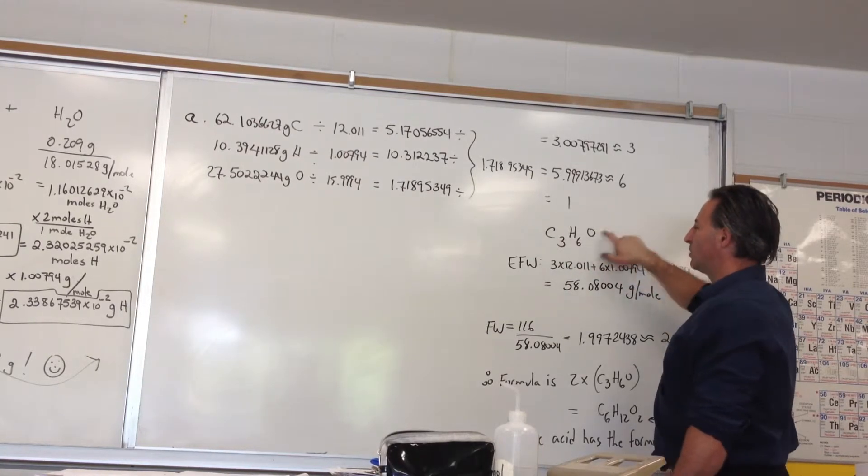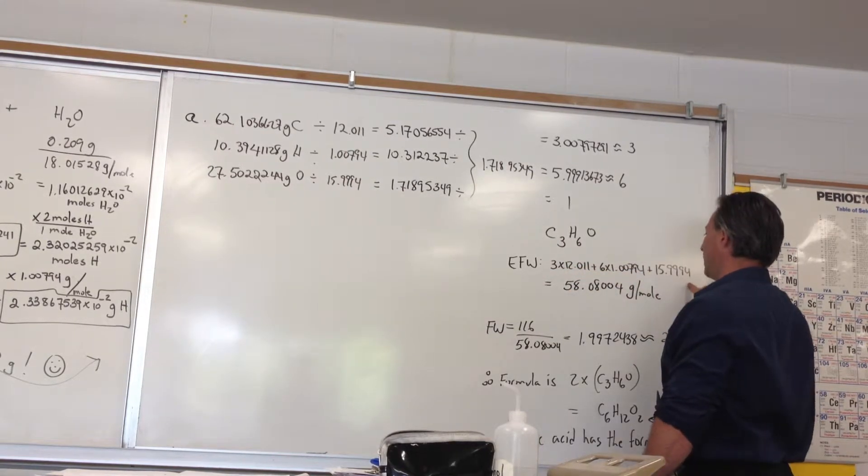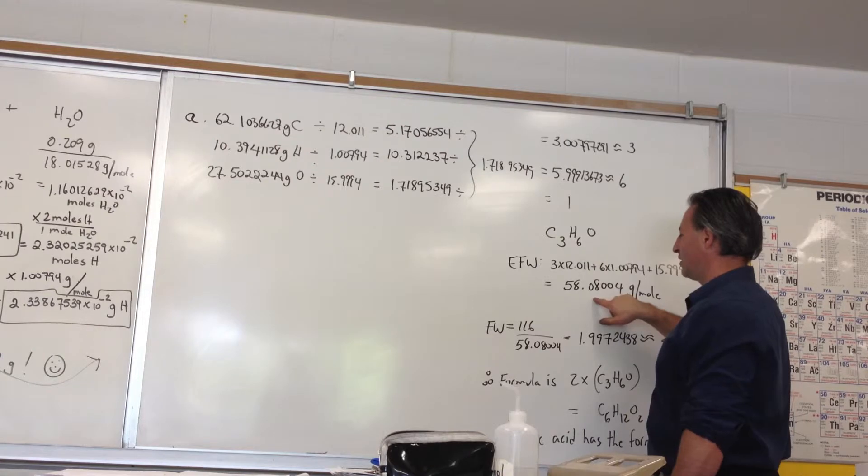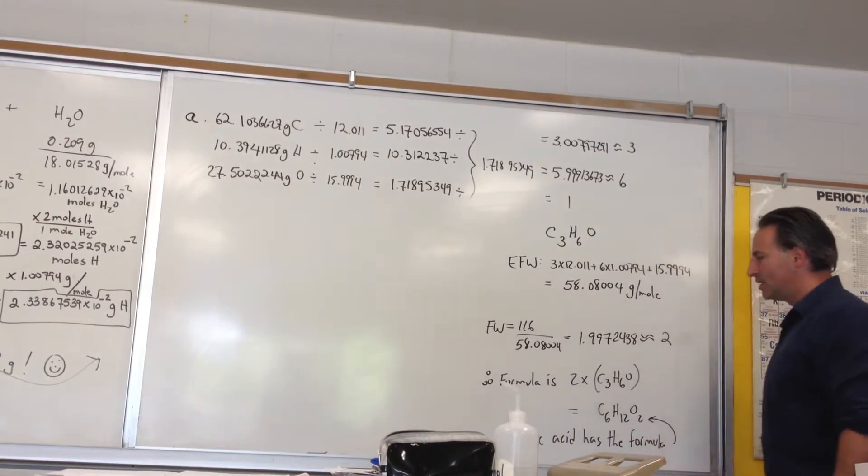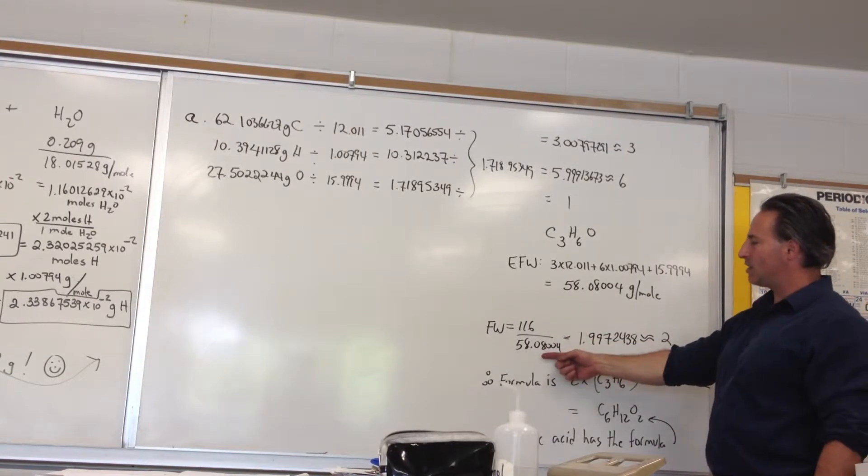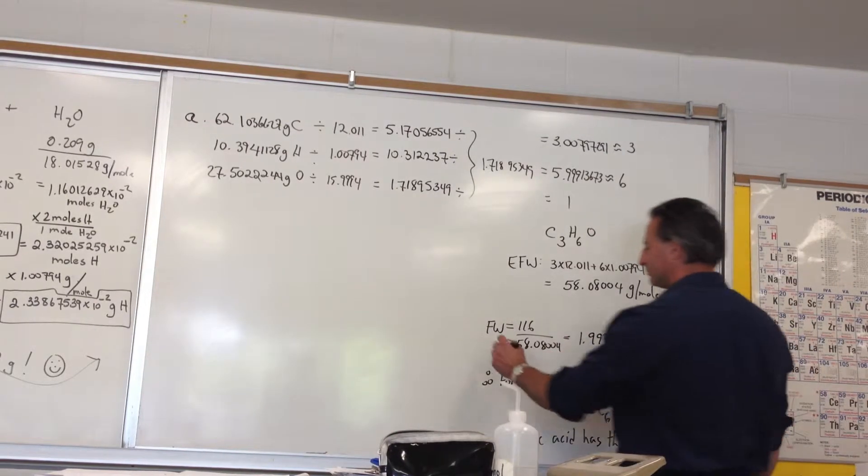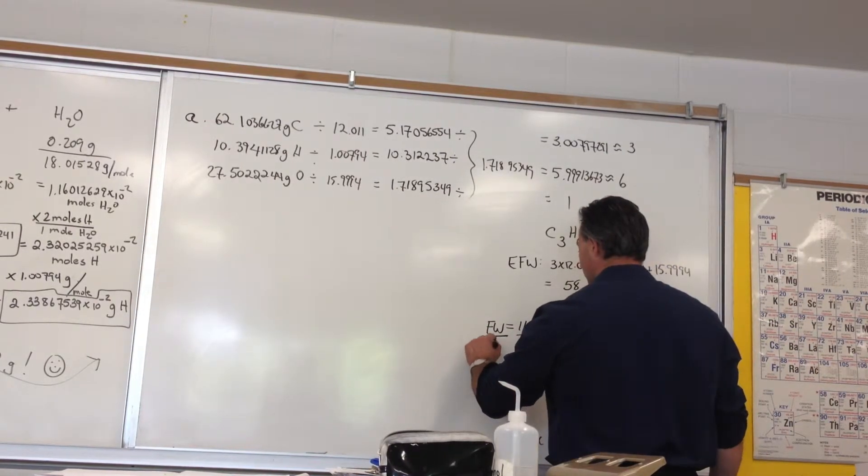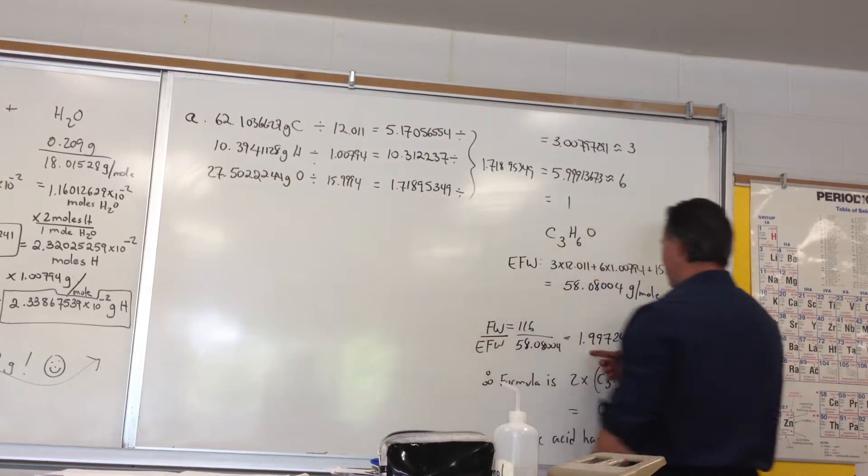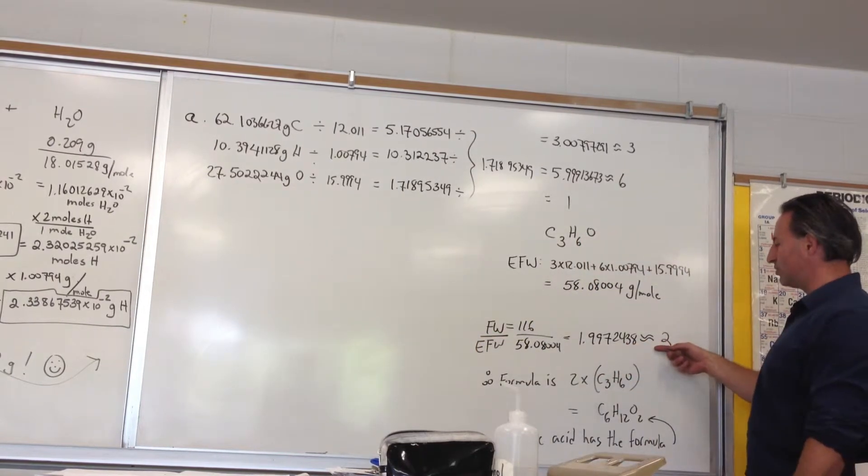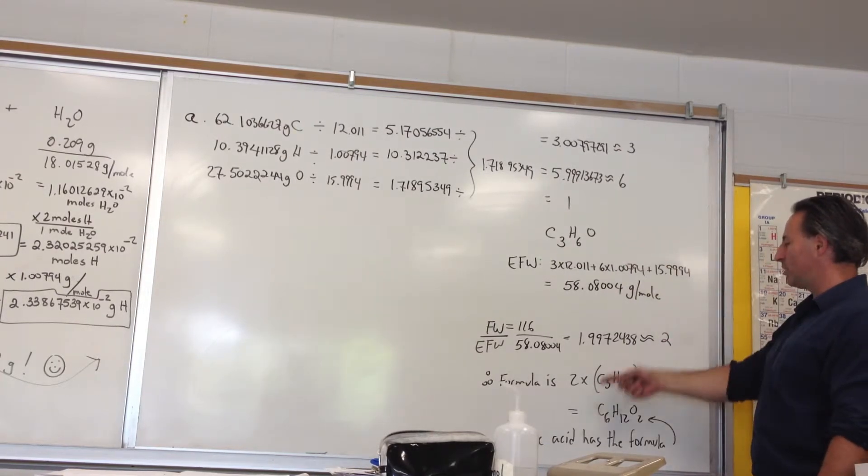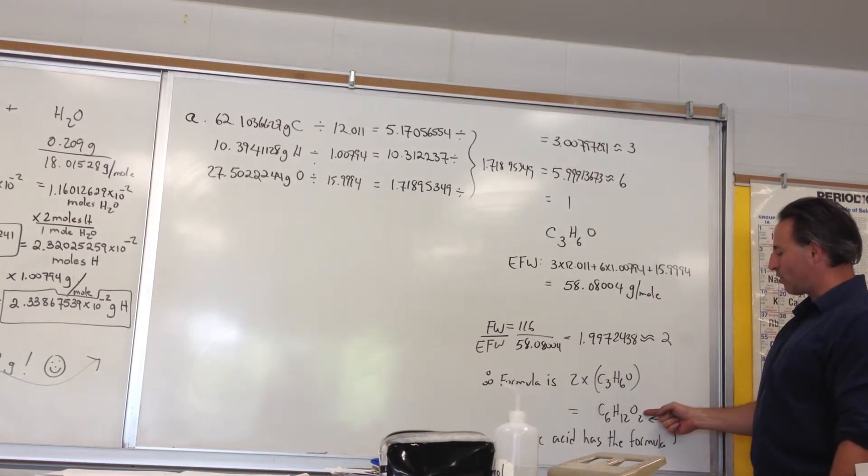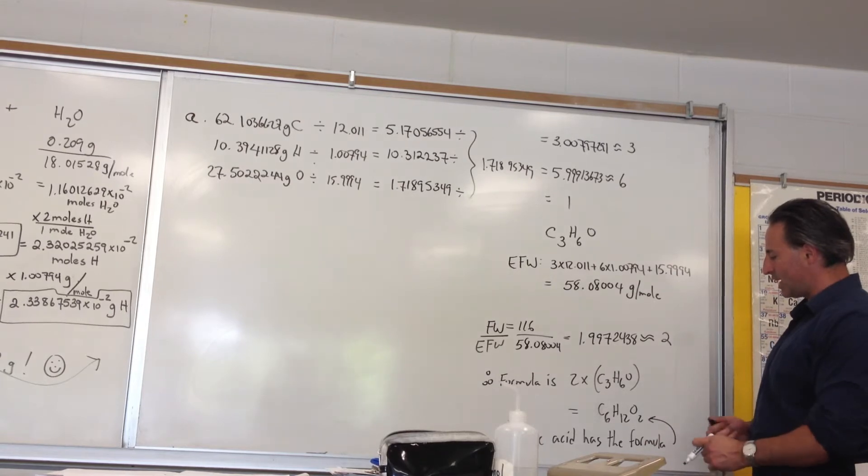From the empirical formula, we calculate the empirical formula weight: 58.08 grams per mole. Since we're told the actual molar mass is 116, dividing 116 by 58.08 gives approximately 2. This means we multiply the empirical formula by 2 to get the molecular formula. The molecular formula of caproic acid is C6H12O2.